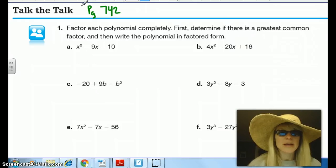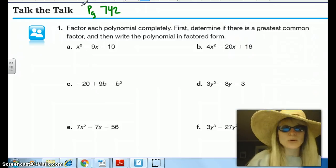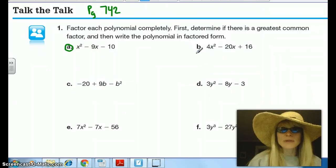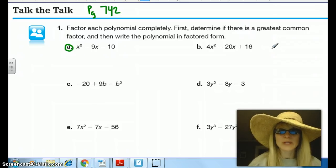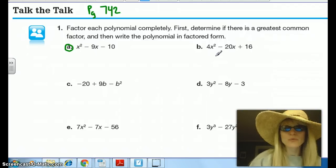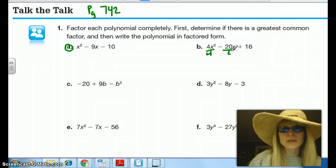We're going to look at factoring some different trinomials here. A is what we've been doing, so I'd like you to go ahead and complete A on your own. But I want to focus on B here. You can notice that these are in a little bit different format than we're used to. One of the things that you should be doing when looking at these is first seeing if there's something you can factor out. Looking at B, 4x² - 20x + 16, I see there's a 4 as a coefficient, a negative 20, and a 16. Automatically I see that 4 is a GCF. So before we start our binomials, we're going to factor out a 4 from each of these terms first.